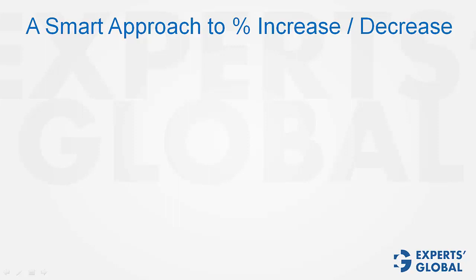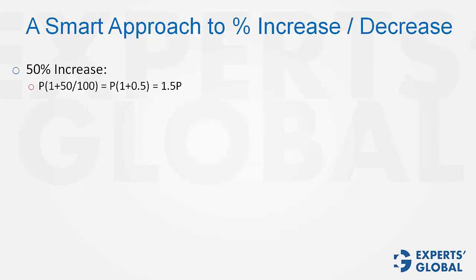A smart approach to percentage increase or decrease. When a term increases by 50%, the conventional way is: p is the original value, so p into 1 plus 50 upon 100 turns out to be p into 1 plus 0.5, which is 1.5p. This is going to take time. A smarter approach: 50% increase means an addition of 0.5p, and therefore p becomes 1.5p straightaway.